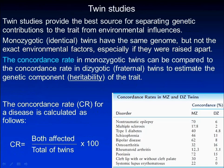Twin studies provide the best source for separating genetic contribution to a trait from environmental influences. Monozygotic twins have the same genome but not exactly the same environmental factors, especially if they were raised apart. The concordance rate in monozygotic twins can be compared to the concordance rate in dizygotic twins to estimate the genetic components of the trait.